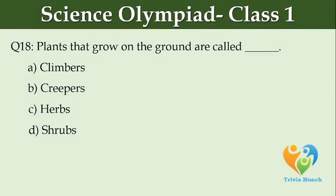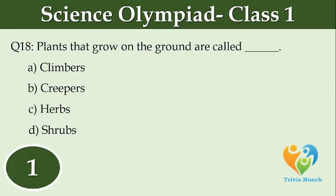Plants that grow on the ground are called dash. Option A: Climbers. Option B: Creepers. Option C: Herbs. Option D: Shrubs.